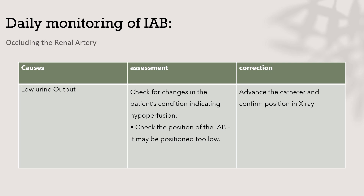The third issue in daily monitoring is occlusion of the renal artery, which can be represented by low urine output. This requires checking the patient's condition for signs of low perfusion and checking the position of the intra-aortic balloon pump, which may be positioned too low, occluding the renal artery. Management involves advancing the catheter upward until the correct position is confirmed by X-ray.